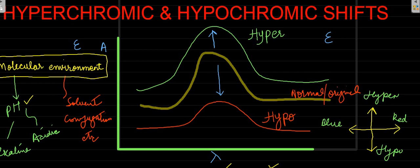This was all about the shifts of wavelengths and epsilons which occur in UV and visible spectroscopy and their possible reasons.